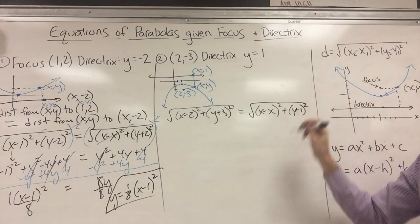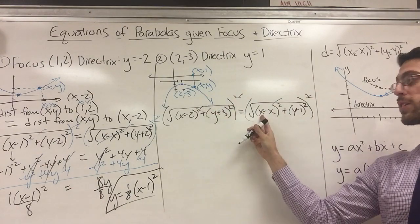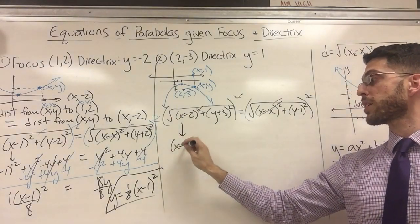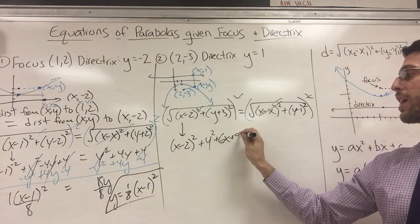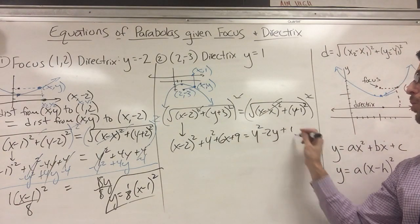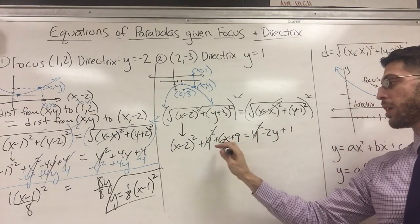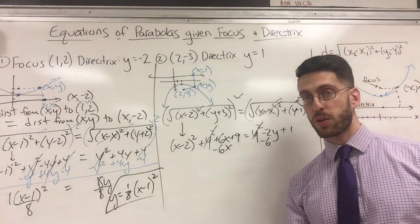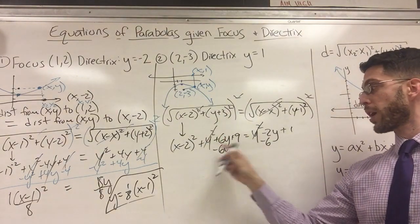Setting up the distance formula: √[(x−2)² + (y+3)²] = √[(x−x)² + (y−1)²]. Square both sides — the square roots cancel, and the x − x term disappears. Expanding (y+3)² using FOIL gives y² + 6y + 9. Expanding (y−1)² gives y² − 2y + 1. Note: what appeared as '6x' in the working is actually 6y — a typo to catch.